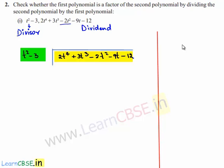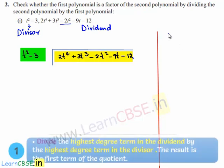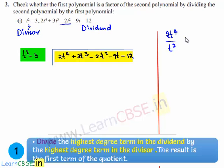The highest degree term of the dividend is 2t⁴ and the highest degree term of the divisor is t². On dividing them, we get 2t², which can be written at the place of the quotient.